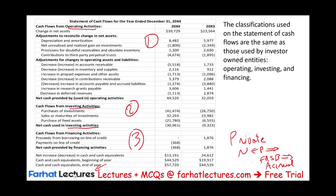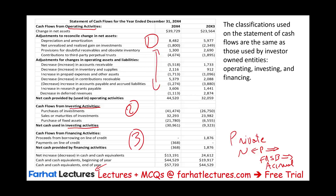If you sue someone and receive a settlement, that's operating activity. If you sold financial assets that are not restricted — for example, someone gave you financial assets and you sell them — that's operating activity. Also included are changes in accounts such as receivables and inventory, just as when you prepare a regular statement of cash flows.